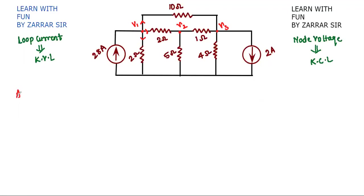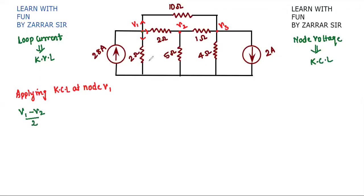Applying KCL at node v1. When you apply KCL at v1, this node is at higher potential and the other will be at lower potential. The first term is for the 2-ohm resistor: v1 minus v2 upon 2. The second part — you are moving from v1 to v3 — so write v1 minus v3 upon 10. This uses the basic fundamental i = v/r, which is Ohm's Law.